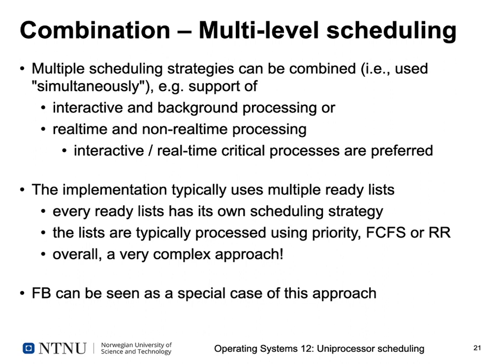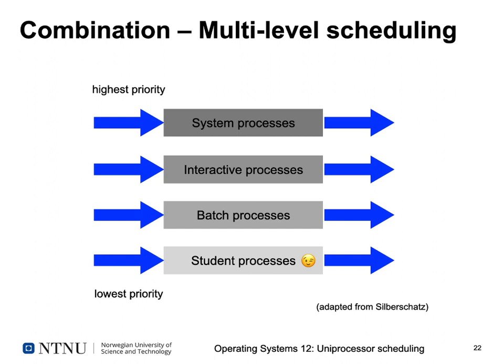Multi-level scheduling could look like this: processes range from highest to lowest priority. System processes get the highest priority with their own queue. Then we have interactive processes, which should have a short response time. Then batch processes. And if time remains, student processes — though of course that's just a little joke.